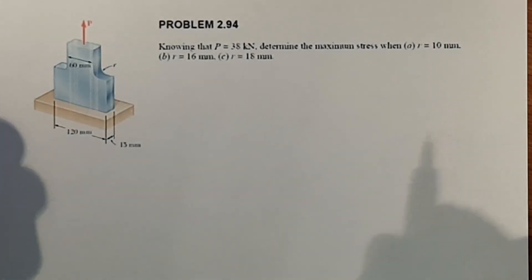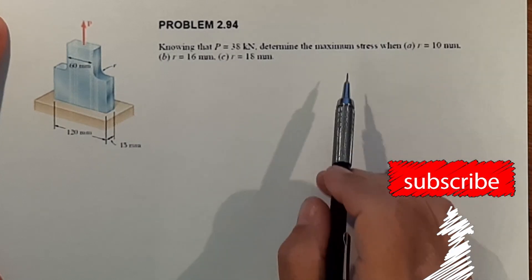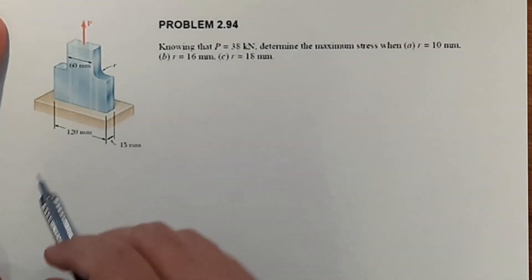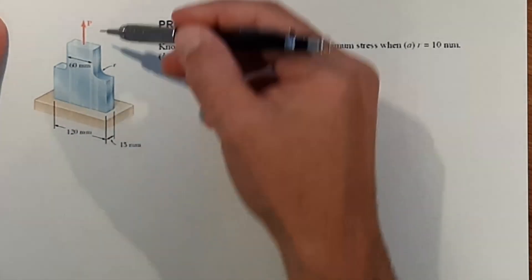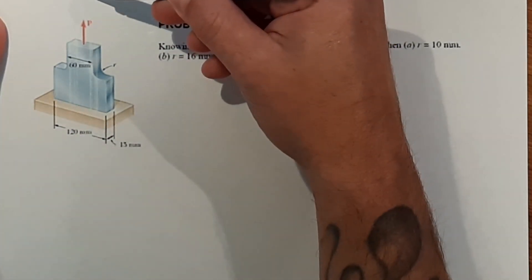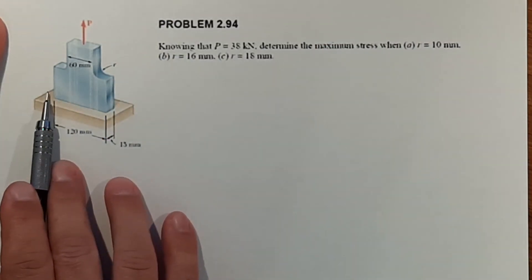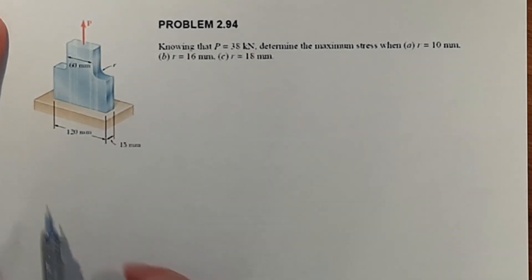All right, so today we are going to figure out how to find the max stress in a structure that has fillets. If we have a plate of steel here and we're going to pull a force P on the end of it, the width of the steel reduces a certain amount and on each side we have fillets.